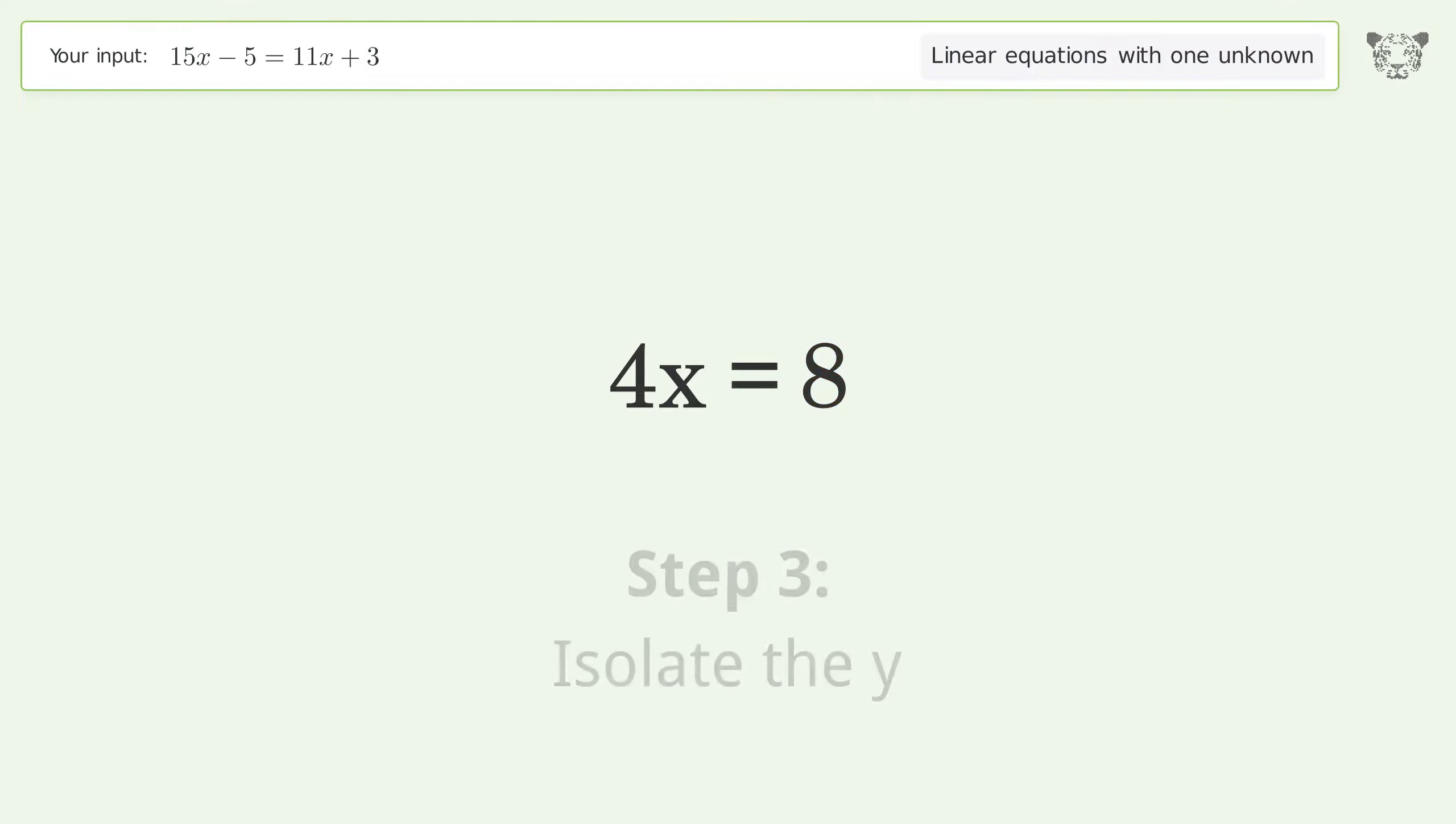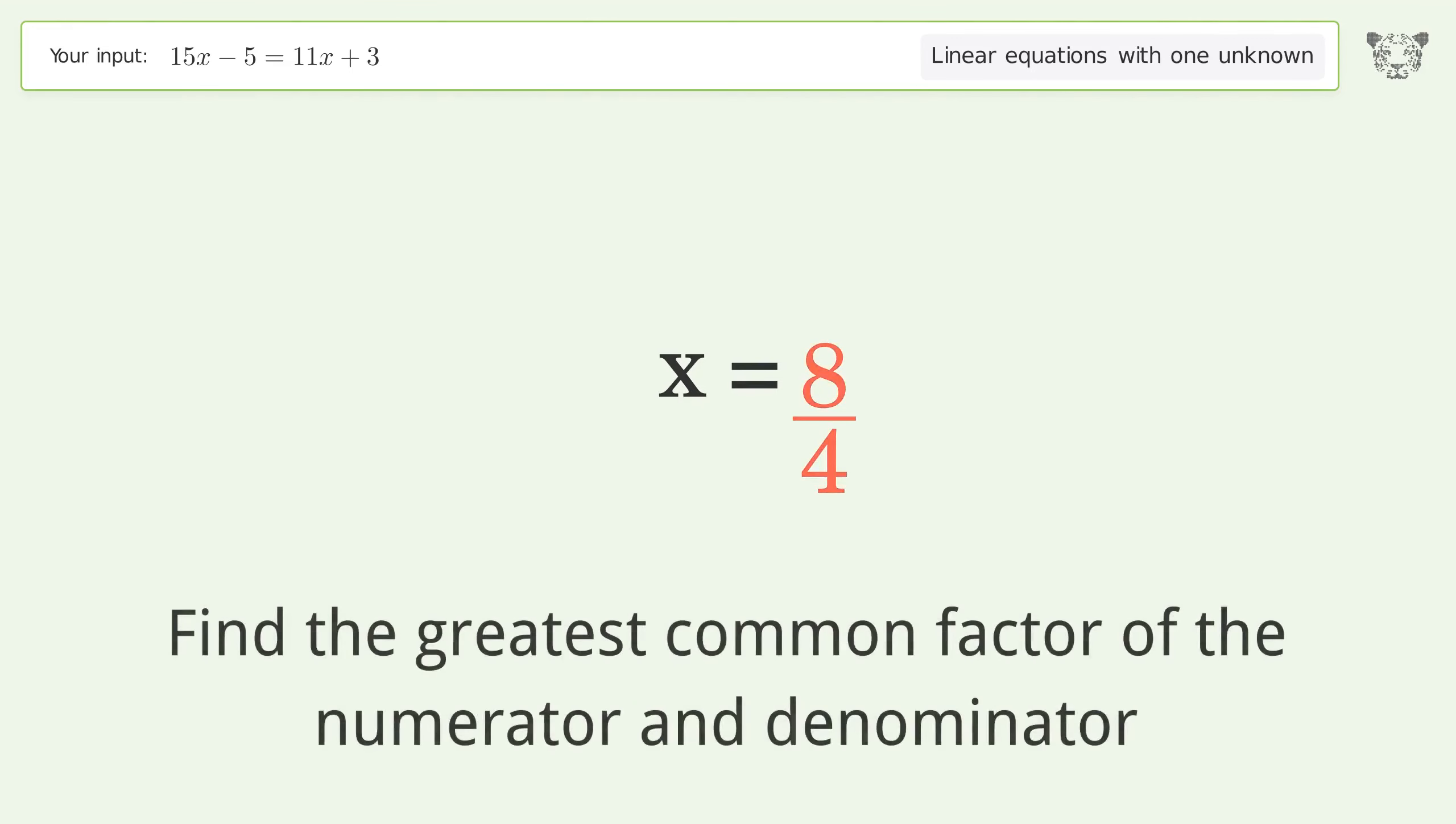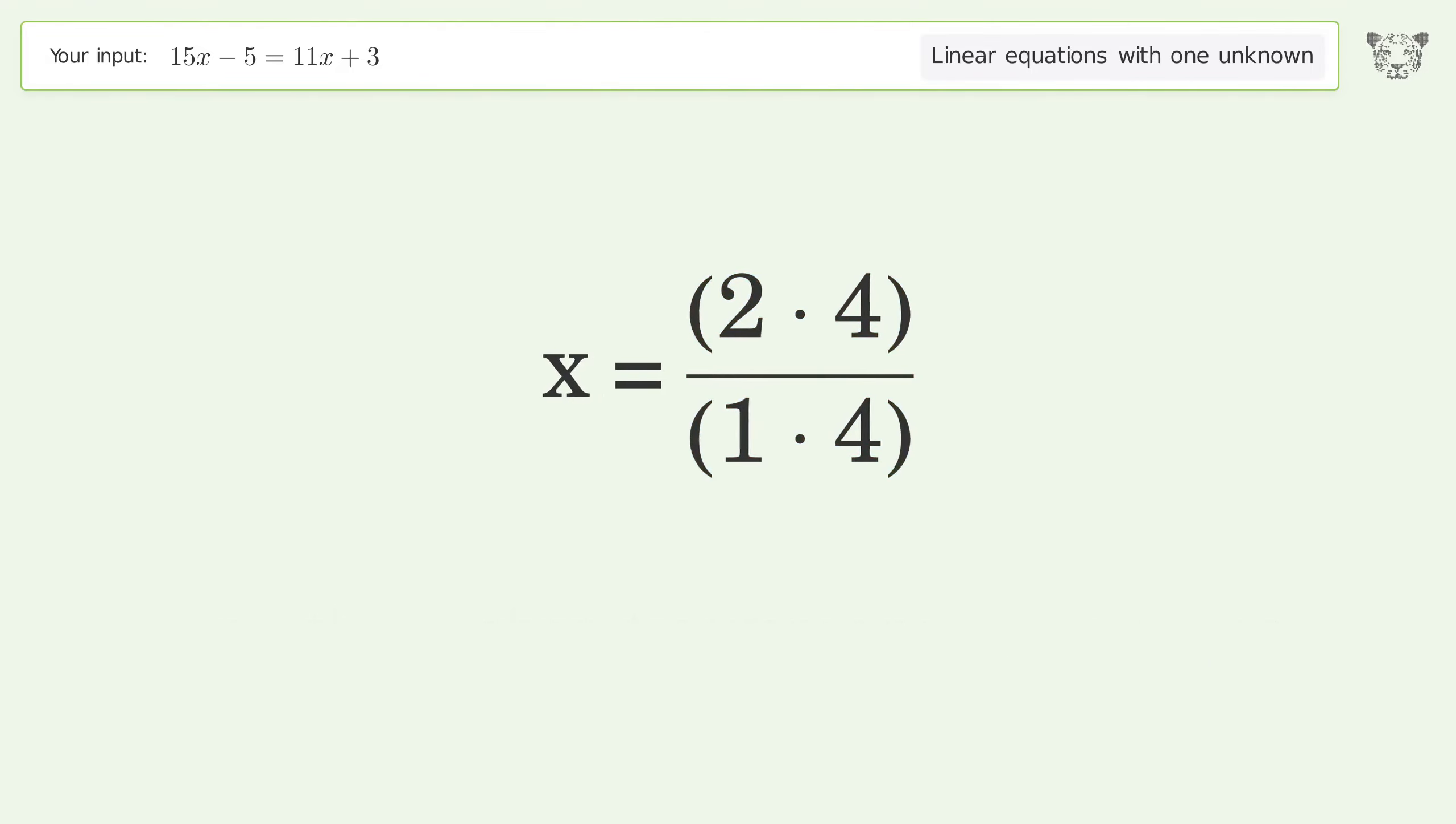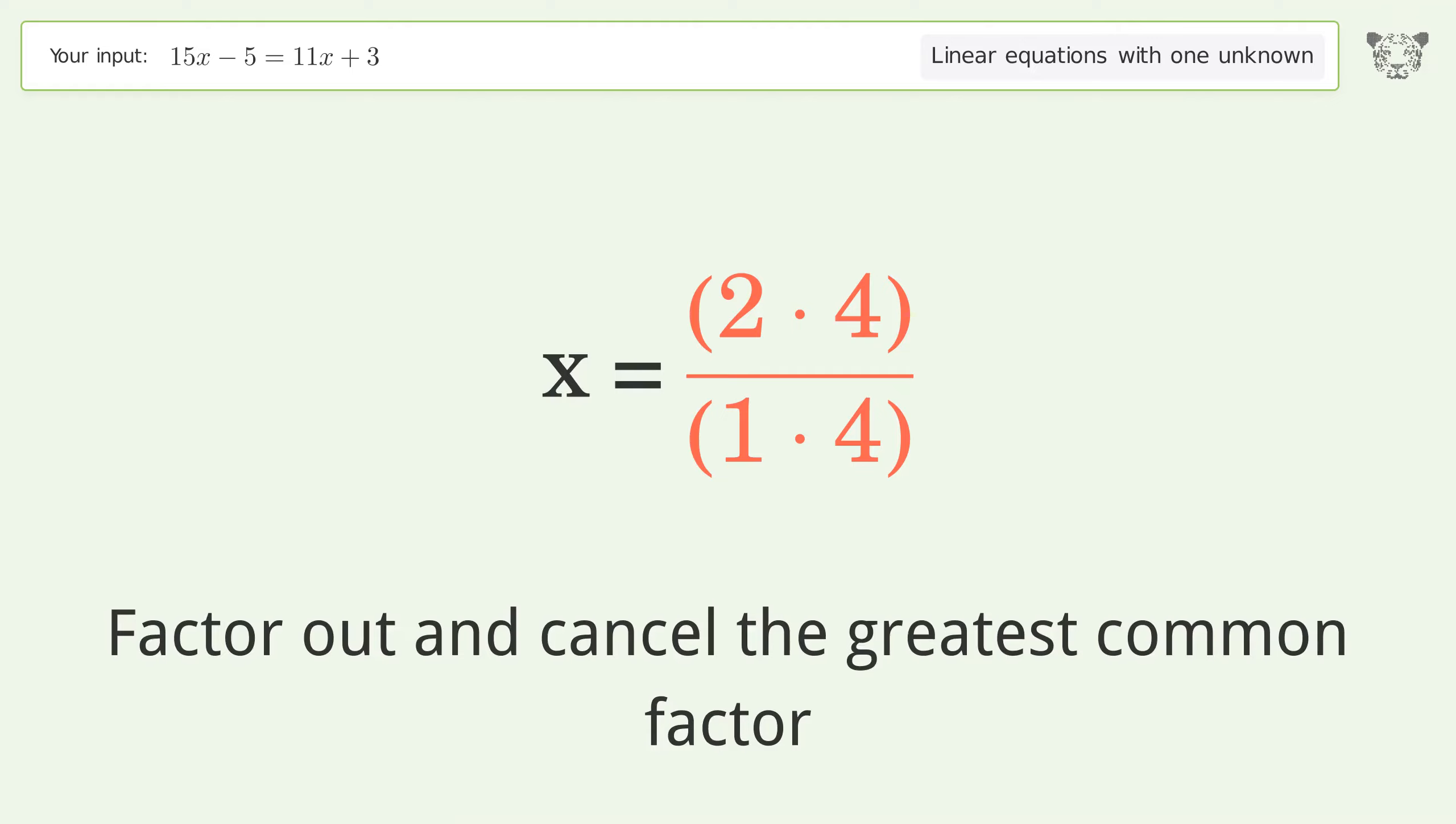Isolate the x. Divide both sides by 4. Simplify the fraction. Find the greatest common factor of the numerator and denominator. Factor out and cancel the greatest common factor.